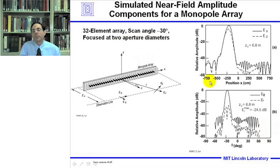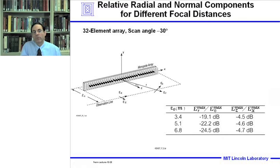Moving to two aperture diameters, the radial component has dropped to minus 24.5 dB below the e-theta component. Eventually, as we get to the far field, the radial component would be extremely weak. This slide summarizes the radial and normal components for different focal distances for the 32-element array scanned to minus 30 degrees. The radial component starts at minus 19.1 dB at one diameter and drops to minus 24.5 dB at two diameters, while the ratio of the e-z component to e-x component stays fairly constant.